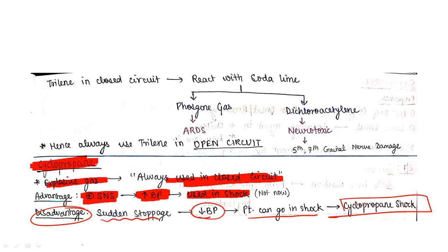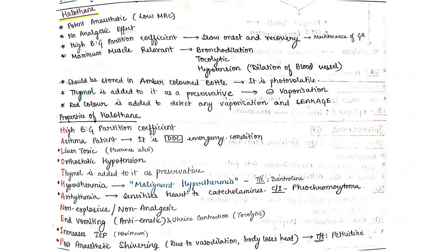Halothane is the most important and most potent anesthetic. It has no analgesic effect, has high blood gas partition coefficient. It has maximum muscle relaxation property so causes bronchodilation, has tocolytic effect, and leads to hypotension.